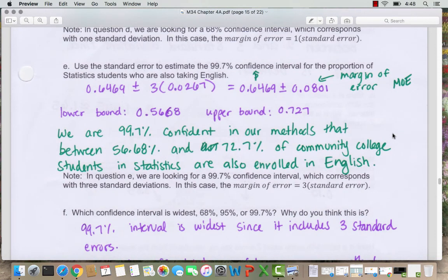So now what if we want to be 99.7% confident? That corresponds with three standard deviations. So notice in the calculation, now we're multiplying a standard error by three. We call this the margin of error when we've multiplied the standard error, the standard deviation by however many standard deviations or standard errors we're counting.